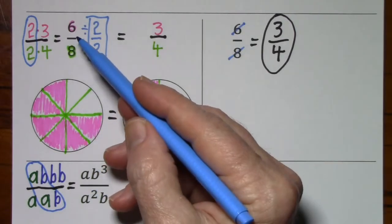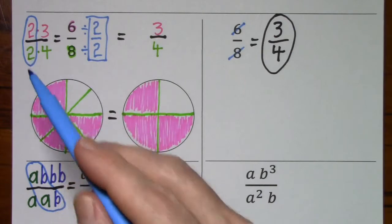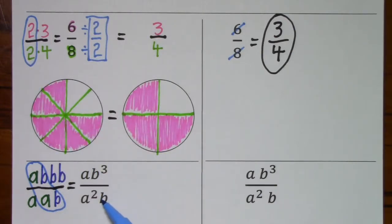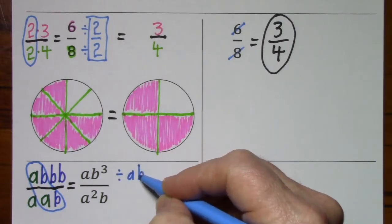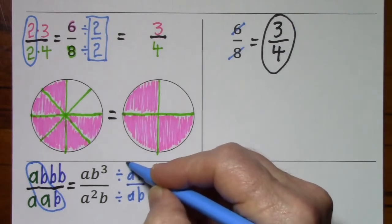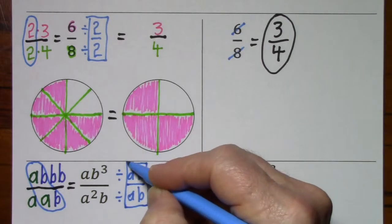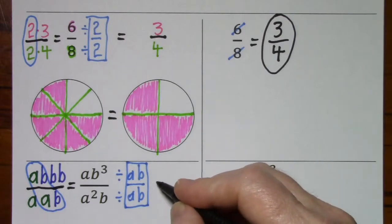So just as up here I divided numerator and denominator by the common factor, I'm going to divide numerator and denominator by the common factor of ab. And really, ab over ab is just a strange looking one. So I'm not going to change the value, I'm only going to change the appearance of ab to the third over a squared b.